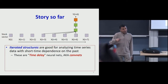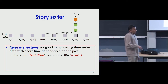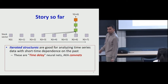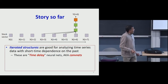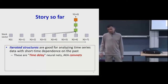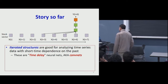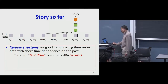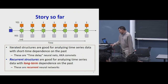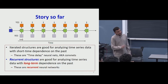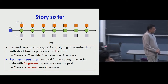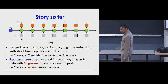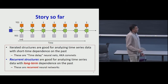So if making a prediction, for instance about something that happens today, only requires you to look at the past four days of input, then you'd use an iterated structure like these. These are what we've recognized as time-delayed neural networks or convolutional neural networks in an earlier part of the course. But if you want to analyze time series data with long-term dependencies, where the dependencies can carry over for an arbitrary amount of time in the past or into the future, then you need recurrent structures.